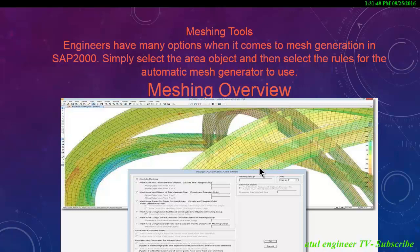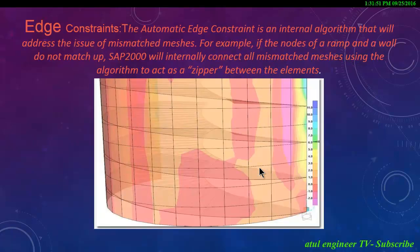Engineers have many options when it comes to mesh generation in SAP 2000. Simply select the area object and then select the rules for the automatic mesh generator to use. The automatic edge constraints algorithm addresses the issue of mismatched meshes — for example, if the nodes of the ramp and the wall do not match up, SAP 2000 will internally connect all mismatched meshes using the algorithm to act as a zipper between the elements.